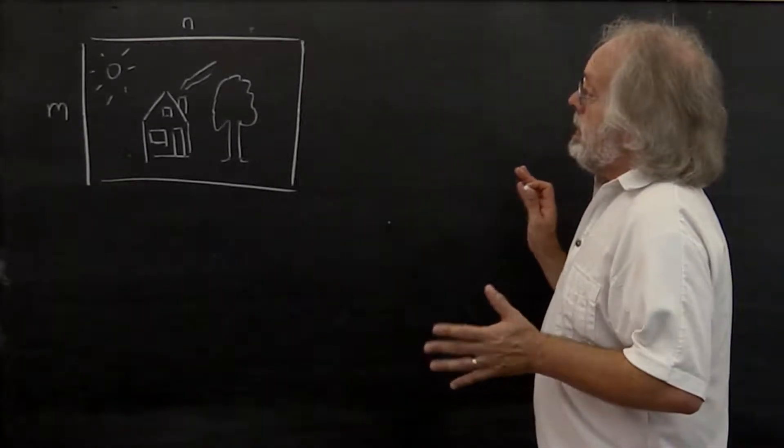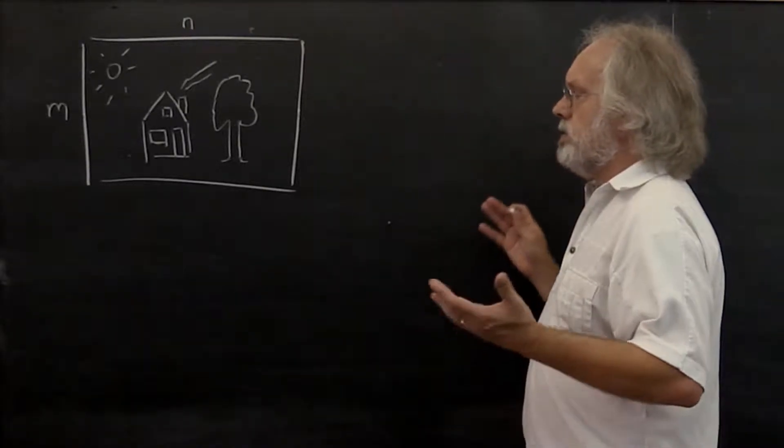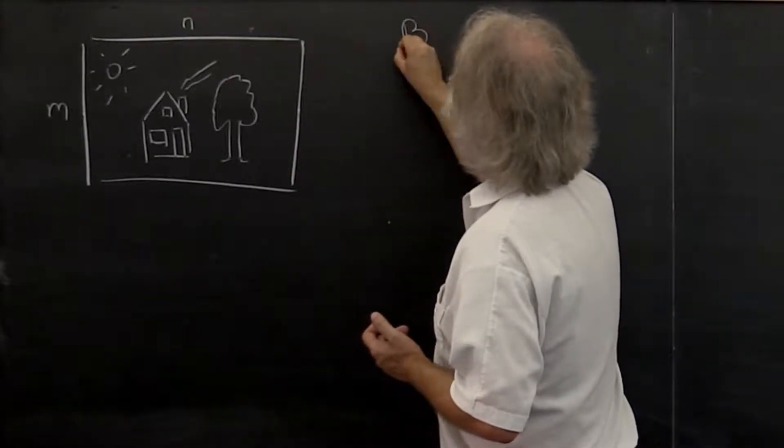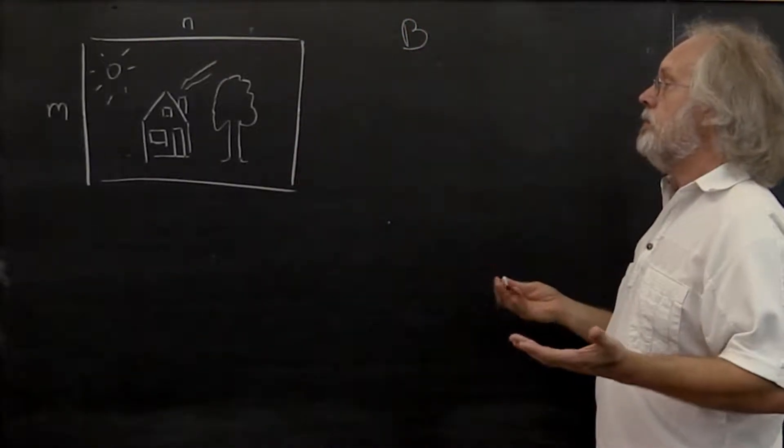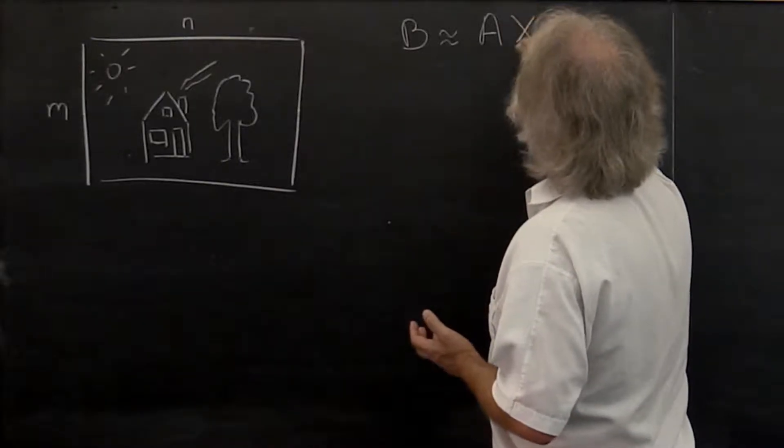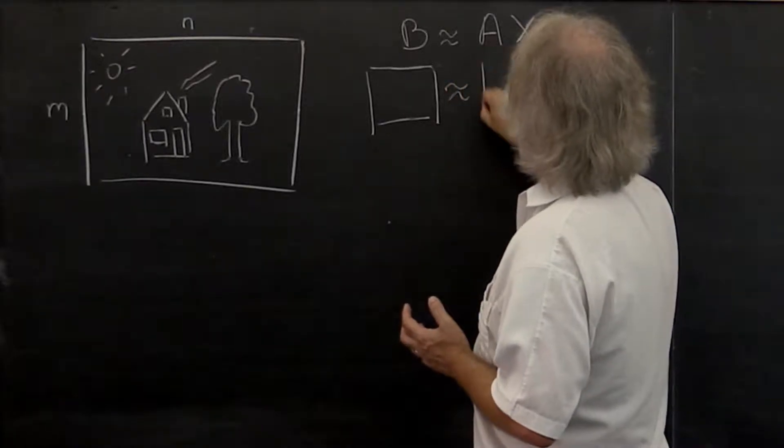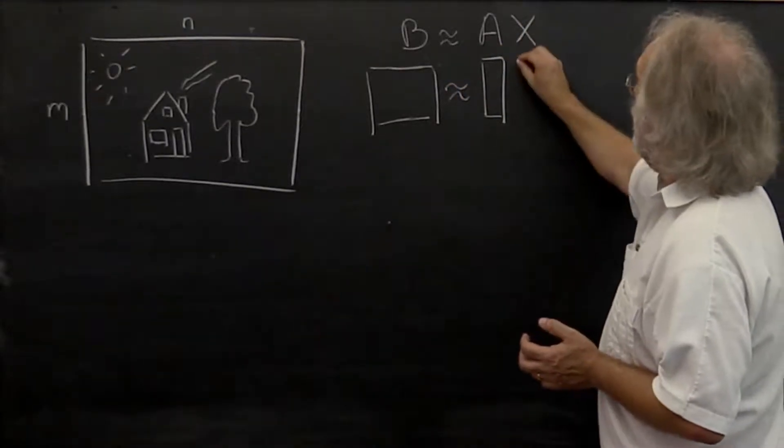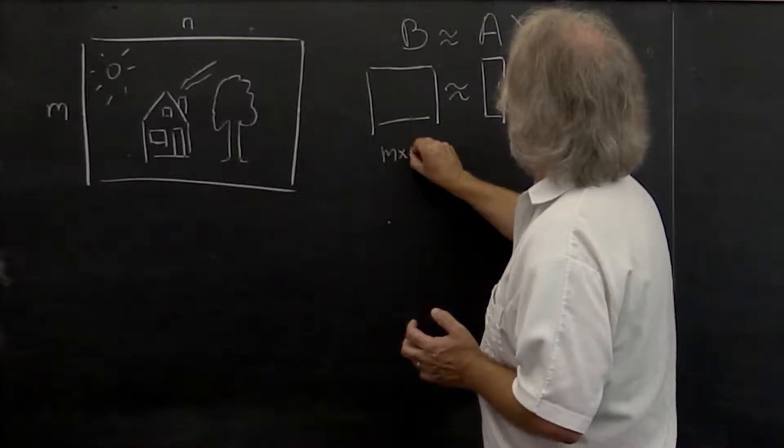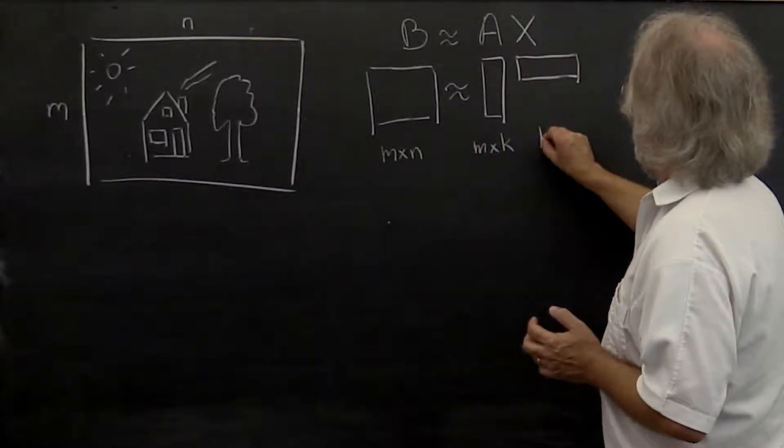So what if we don't want to store all of the pixels? What if we want to somehow do data compression? If we call this the matrix B, then what we may want to do is approximate this with a matrix A times a matrix X, where matrix B is the entire picture. A is a matrix with only a few columns and X is a matrix with only a few rows. B is M by N, A is M by K, and X is K by N.